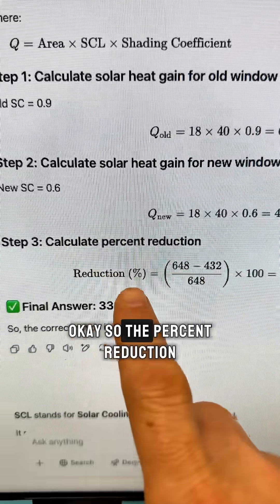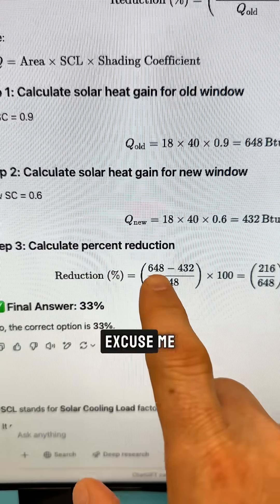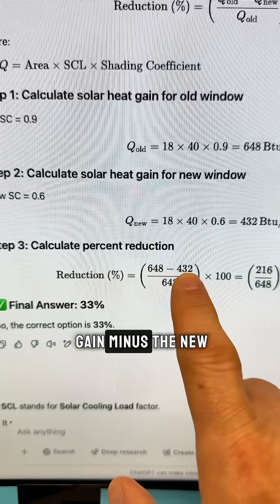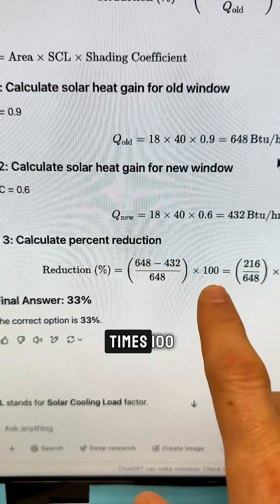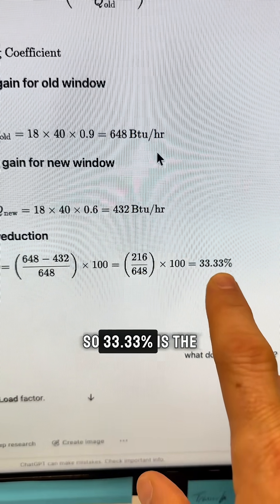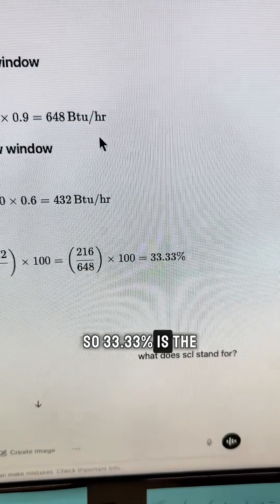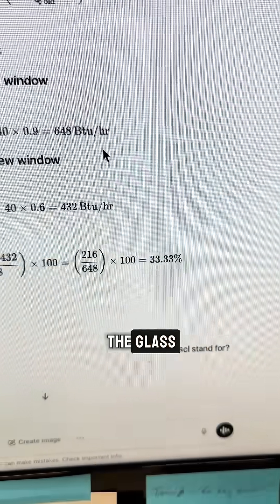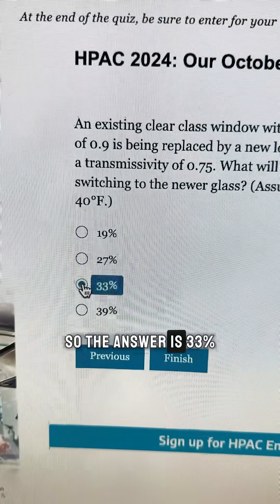Okay, so the percent reduction is the old heat gain minus the new divided by the old times 100. And you could just do the math here. So 33.33% is the reduction in heat load due to changing out the glass. So the answer is 33%.